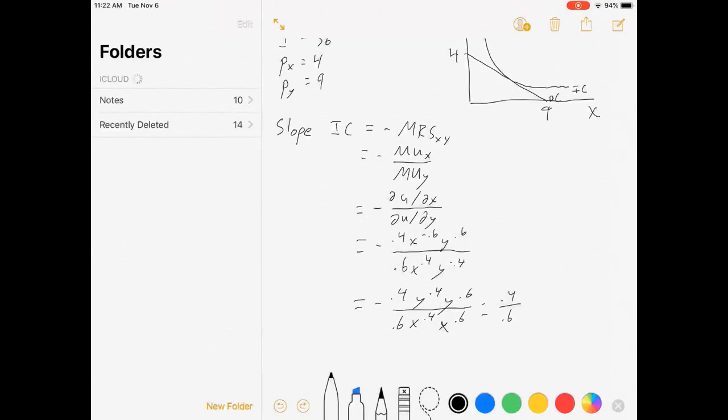0.4 over 0.6. Y over x. Which is, oops, I forgot my negative sign. Which is negative 2 over 3 y over x. Notice the slope of this curved line depends very much on where we are on our y and x. And that's what makes it a little more complicated. But nevertheless, we have a slope. The slope of the indifference curve is minus 2 thirds y over x.